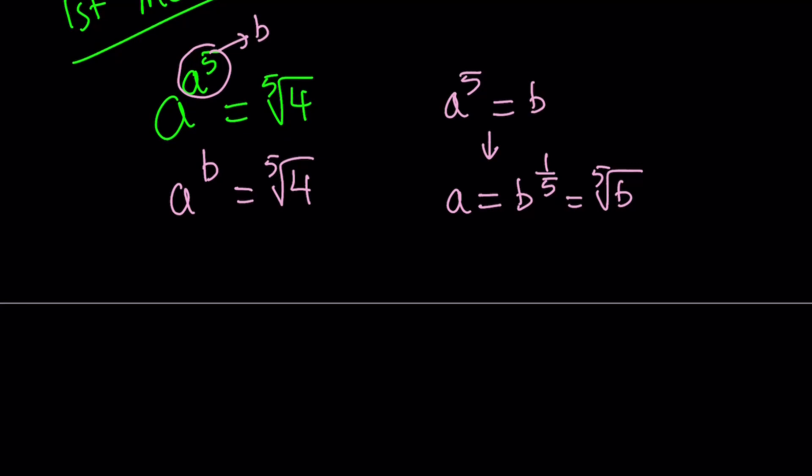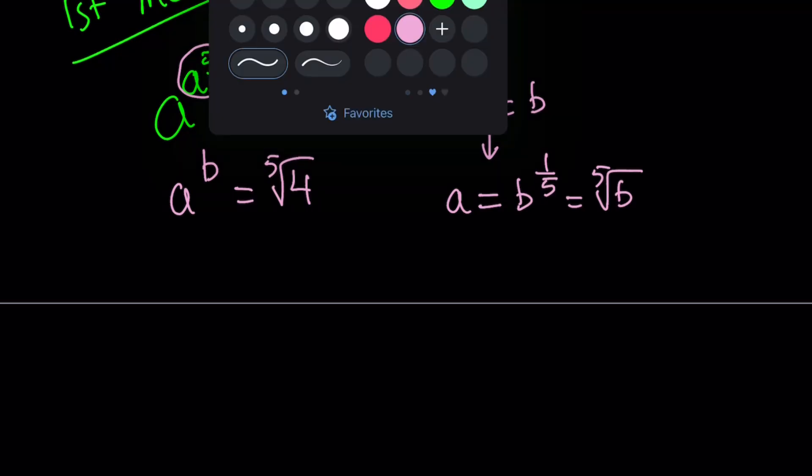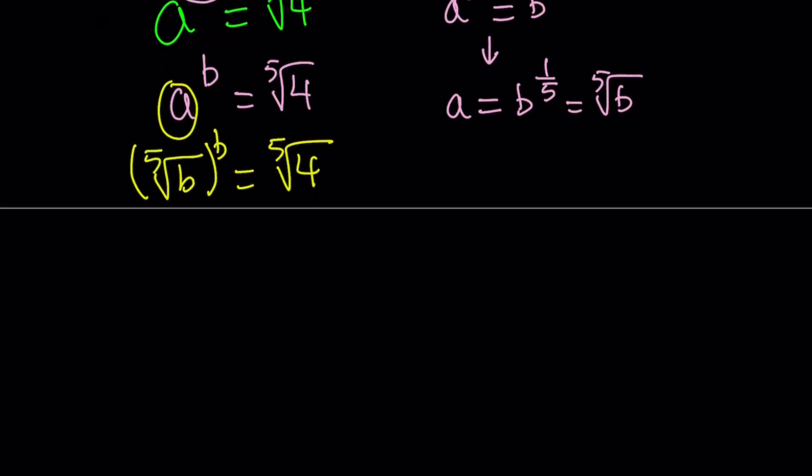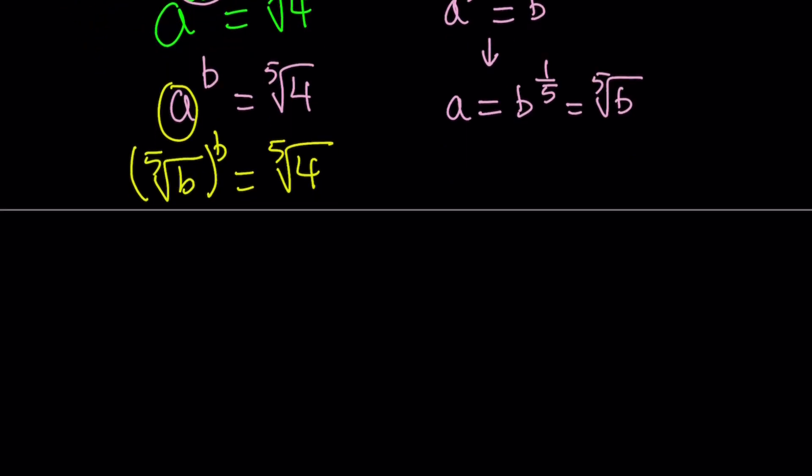So we have a in terms of b, the fifth root of b, and now we can substitute that here. We replace a with ⁵√b, then raise it to the power b, and set it equal to ⁵√4. We can put the b inside, so write this as ⁵√(b^b) = ⁵√4. Since both sides have the fifth root, we can raise both sides to the fifth power.